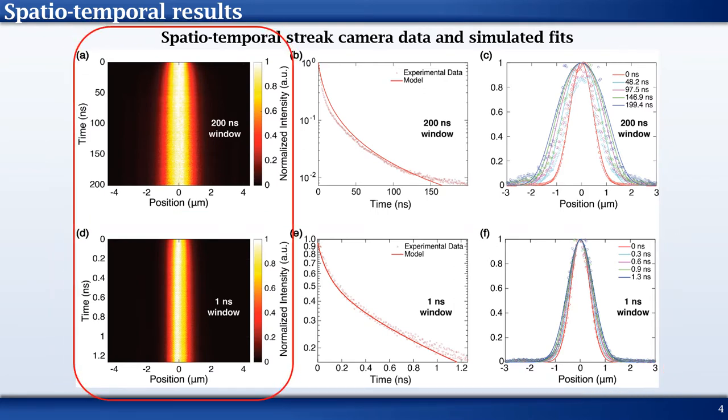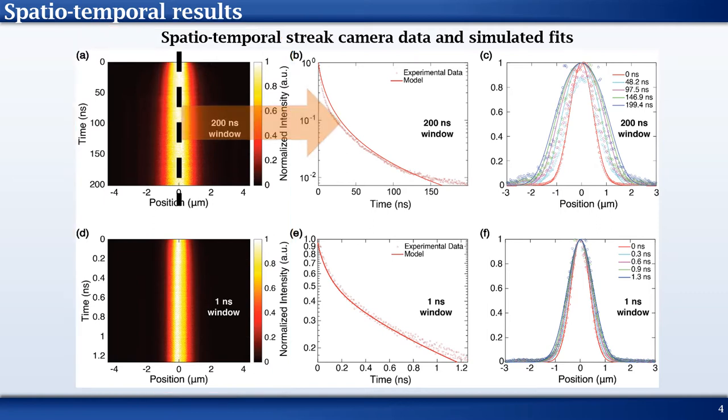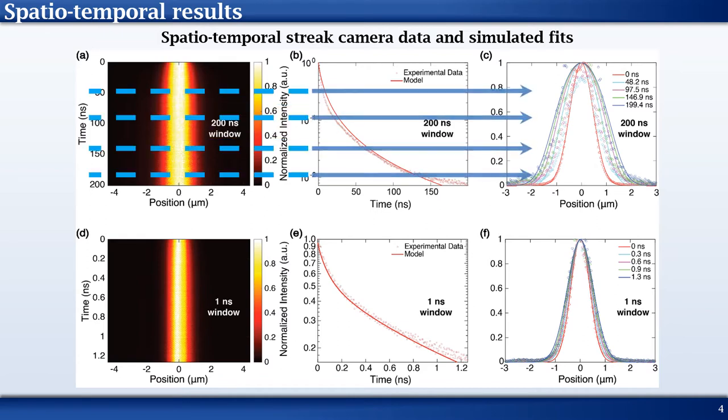Panels A and D show time-normalized streak camera data captured for an acetonitrile processed MAPI3 or methyl ammonium lead triiodide sample. For the 200 nanosecond window measurement, a sectional view alongside a model-based fit is shown for R equals 0 microns in panel B. Also, horizontal sectional views are also shown for five different times in panel C.